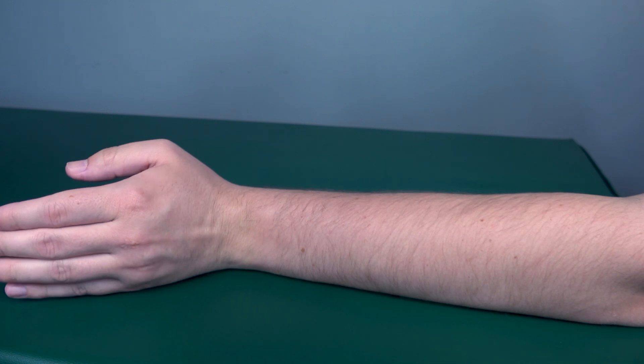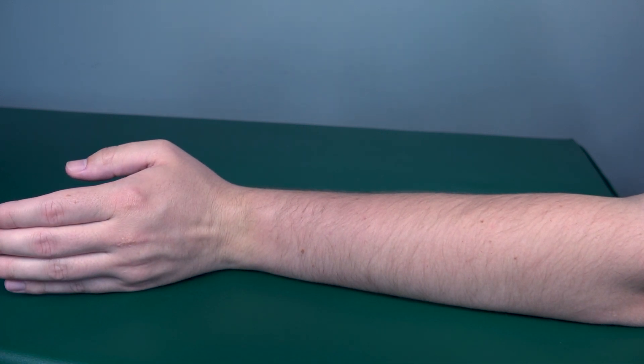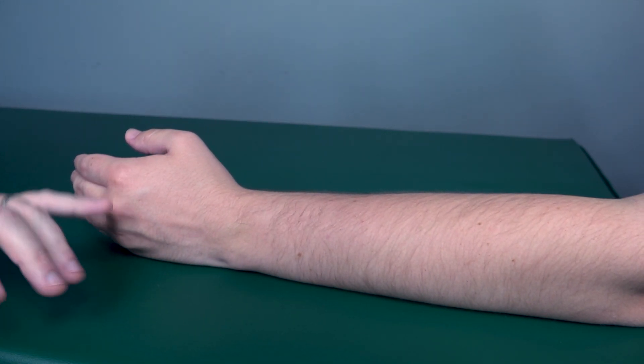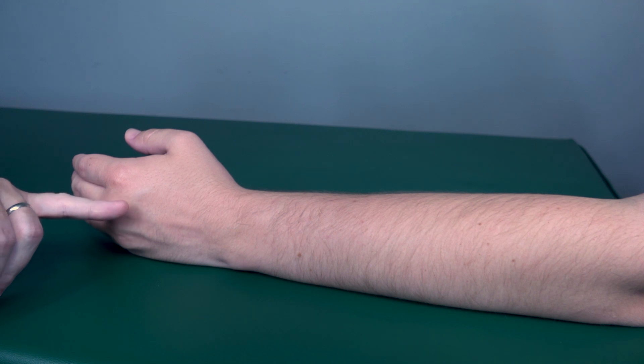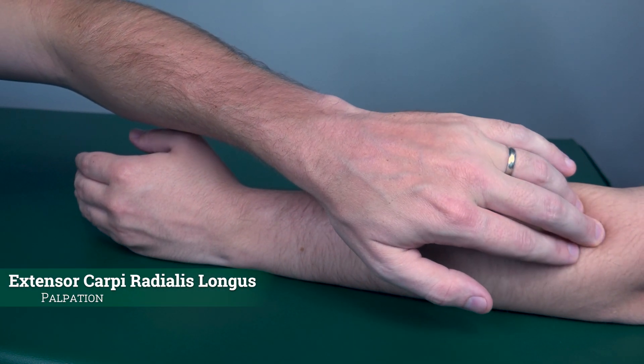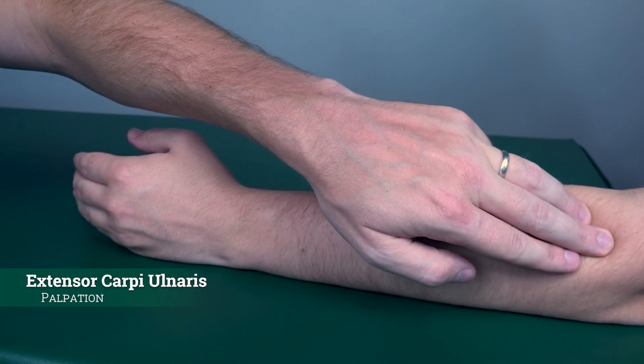If there is any movement whatsoever, as he has shown here, that is at least a two. If he cannot perform any movement while in this position, then I will come up here and I will palpate for the extensor carpi radialis longus, the extensor carpi radialis brevis, and the extensor carpi ulnaris.